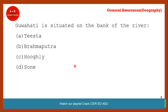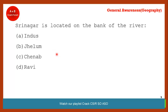Guwahati is situated on the bank of which river? These types of questions where you need to answer which city is located on which river are best answered through maps. The previous chapter will be very helpful. The correct answer is Brahmaputra, because Guwahati is a northeast city and Brahmaputra flows through the northeast region.